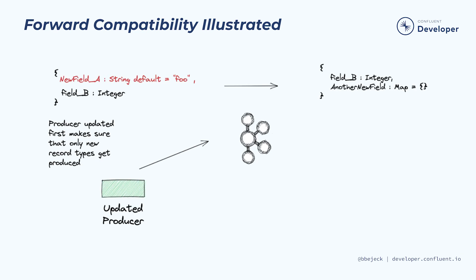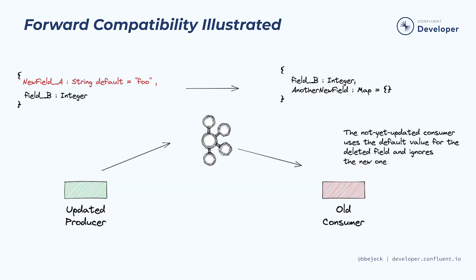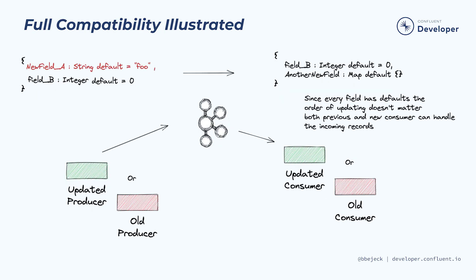With forward compatibility, you can delete fields that have a default and add new fields. In this case, you'll want to update your producer clients first. In the event that you have a consumer you haven't updated yet, it will continue to operate since it will just use the default value for the field that was deleted and ignore the newly added field. And finally, with full compatibility, every field in the schema has a default value, so the order of updating clients doesn't matter. Regardless of the order, both old and new consumers will continue to work properly.